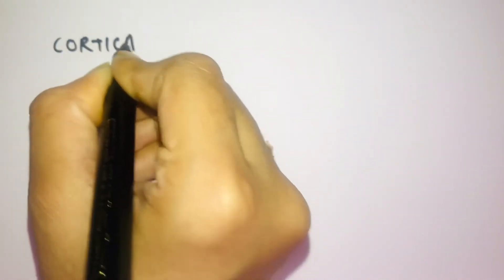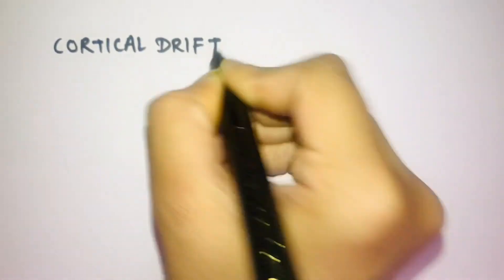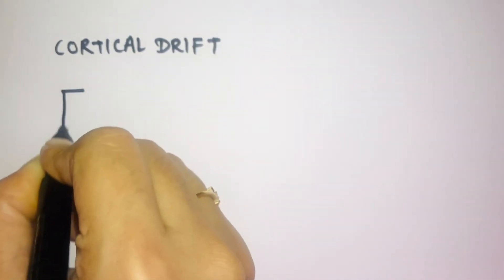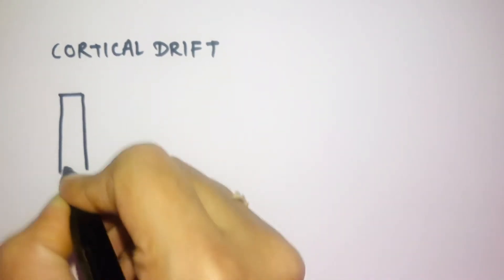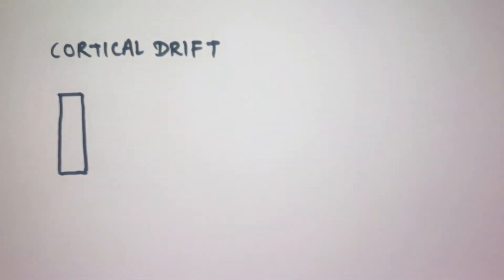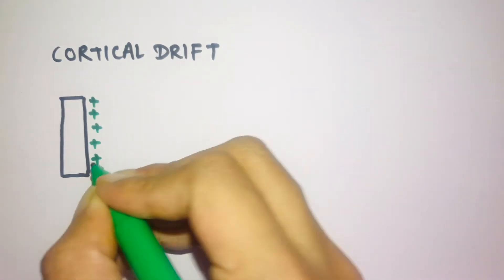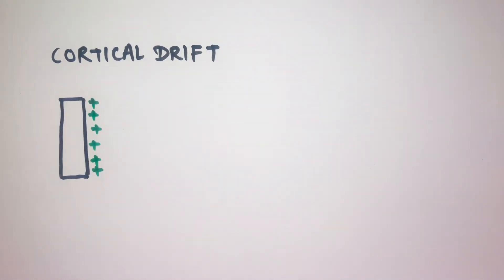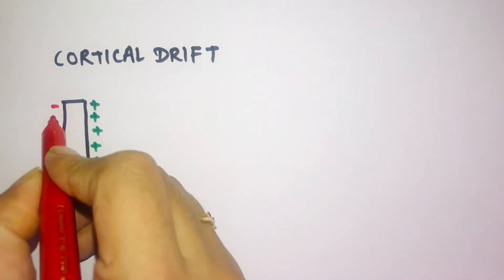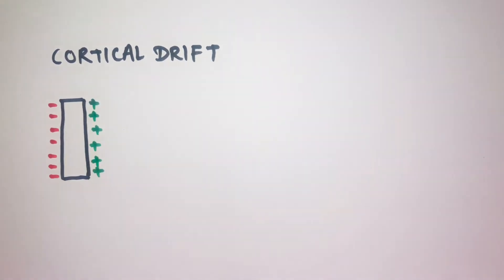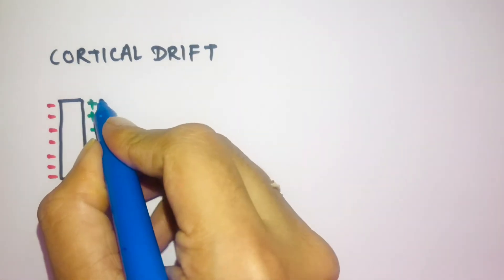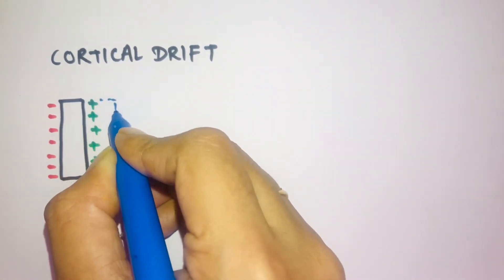The next mechanism is cortical drift. For example, this is a bone at position X. Cortical drift is a type of growth movement occurring towards the depository surface by deposition and resorption. The green areas with a plus sign represent deposition, and the minus sign represents resorption.